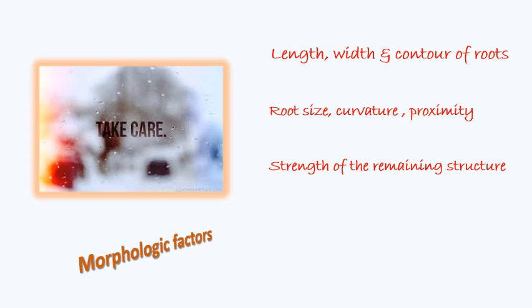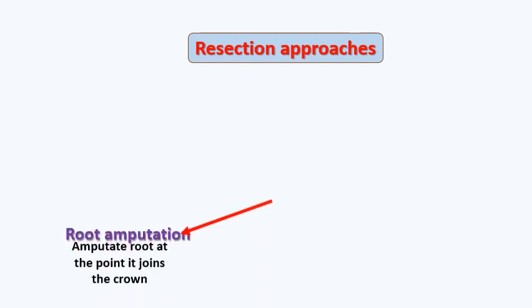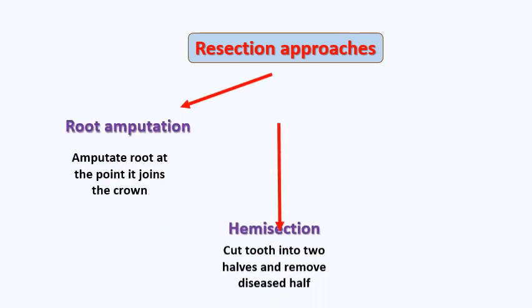The more divergent the roots, the better the anchorage. Root proximity and contour matter — roots that are more flattened provide better anchorage in bone compared to rounded cross-sections. Also consider the furcation location. There are three types of resection approaches.